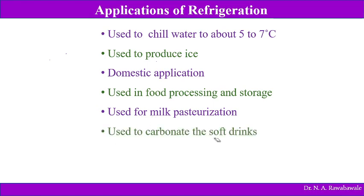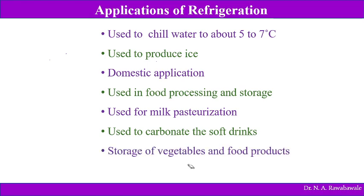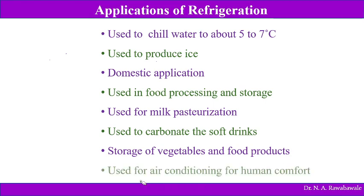Refrigeration is used to carbonate soft drinks — carbon dioxide is added into soft drinks through the process of refrigeration. It is used for storage of vegetables and food products. It is used for air conditioning for human comfort. Air conditioning is nothing but an application of refrigeration — in air conditioning, not only is air cooled, but the condition or quality of air is maintained with the help of a refrigeration system, to reduce, increase, or maintain the temperature of air.